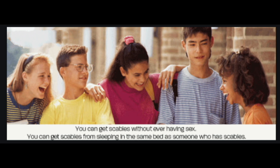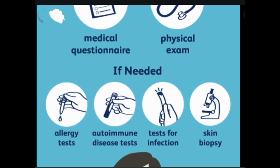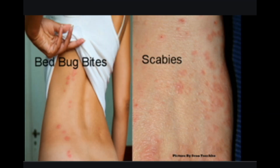Your doctor will likely diagnose scabies by performing a physical exam and inspecting the affected skin. In some cases, they may confirm the diagnosis by removing a mite with a needle, or by scraping off a small section of skin to obtain a tissue sample examined under a microscope for mites or eggs. A burrow ink test can also help spot burrowed paths in your skin: the doctor drops ink onto an infested area, wipes it away, and any ink that fell into the burrowed tunnels will remain visible to the naked eye.